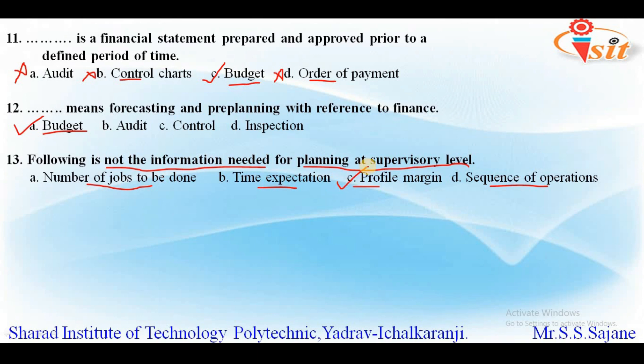Except profit margin, all the other options — number of jobs to be done, time expectation, and sequence of operations — are all information needed for planning at supervisory level.